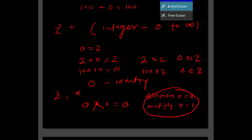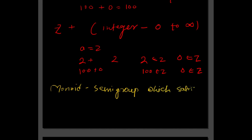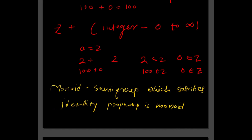Now let us define monoid. A monoid is a semigroup that satisfies the identity property. We call it a semigroup because a semigroup already satisfies closure and associative properties. A semigroup that additionally satisfies the identity property is called a monoid. This identity property is also required for the next structure we will study — the group.